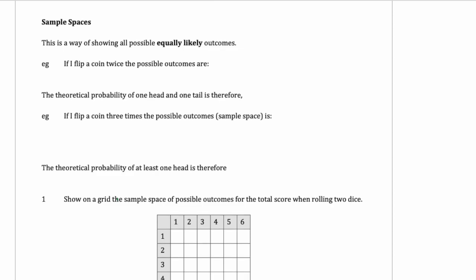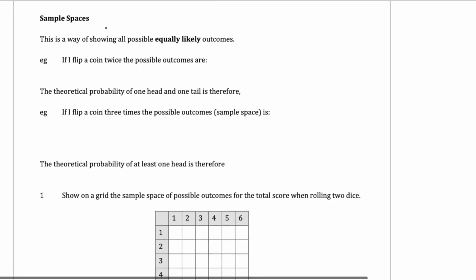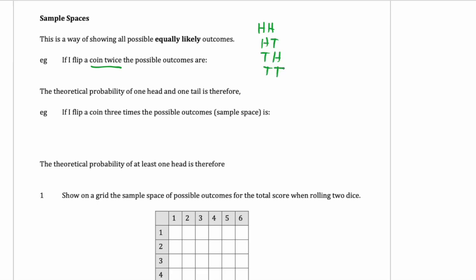One way to show all the probabilities is with a sample space — sometimes that's the best approach. If you flip a coin twice, the possibilities are: heads-heads, heads-tails, tails-heads, tails-tails. You can look at any probability using this sample space. For example, the theoretical probability of getting 1 head and 1 tail: both heads-tails and tails-heads have 1 head and 1 tail, so it is 2 out of 4, or half, or 50%.